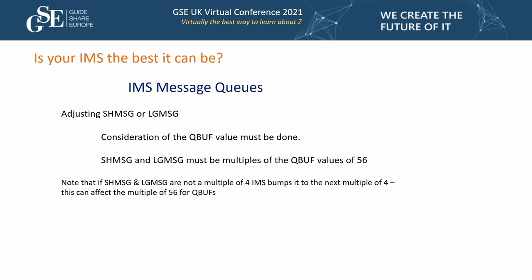One more thing on message queues: when adjusting short and long message queues, they must be multiples of 56 because that's what the queue pointer values use to get to the DRRNs recording that information on DASD. If the short or long message size is not a multiple of four, IMS will bump it to the next multiple of four, which can affect your queue buffer counts. So calculate carefully, write it down, and make sure short and long message values are multiples of 56 to make this work correctly the first time.